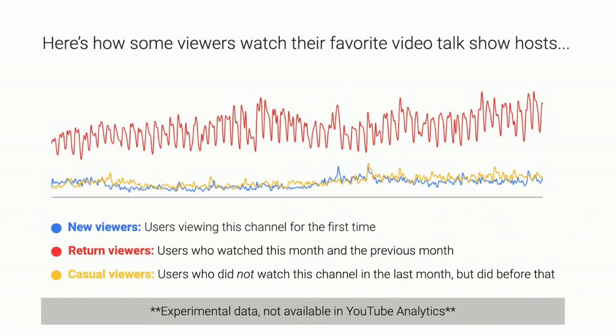Let's start with an example of channels that have a really loyal audience. You'll see three different lines: in blue, new viewers discovering these channels for the very first time; in red, return viewers who watched last month and the current month; and in yellow, a negative value — viewers who watched last month but didn't return. This group of channels are video talk show hosts or independent creators with a consistent host and personality.